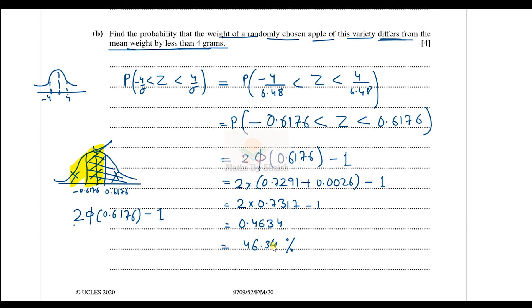So the probability that the weight differs from the mean by less than 4 grams is 46.34%. I hope that is clear. We will discuss the rest of the parts in the next video. Thank you so much.